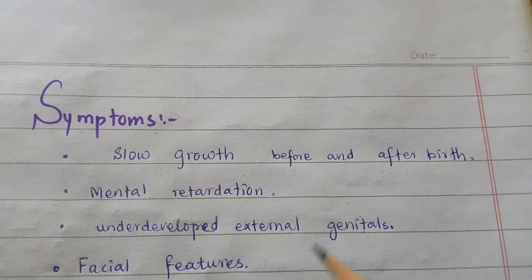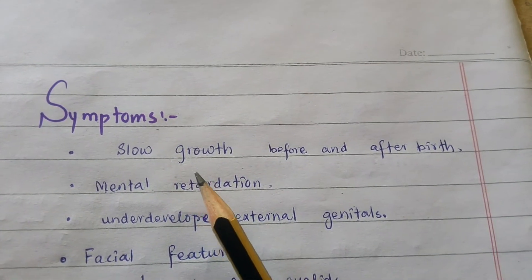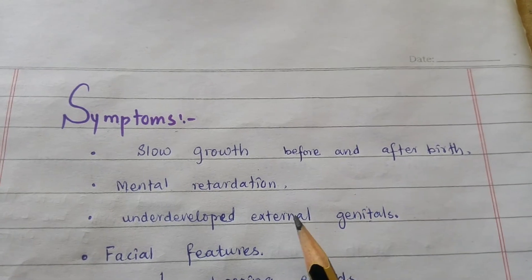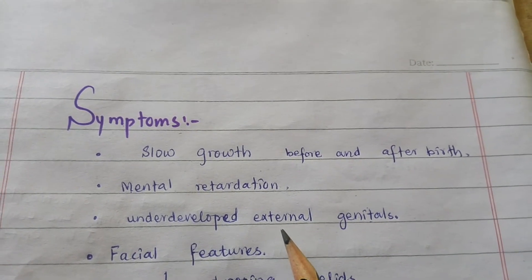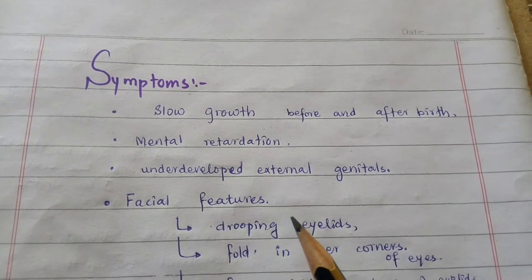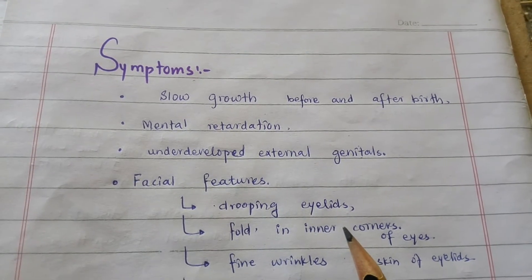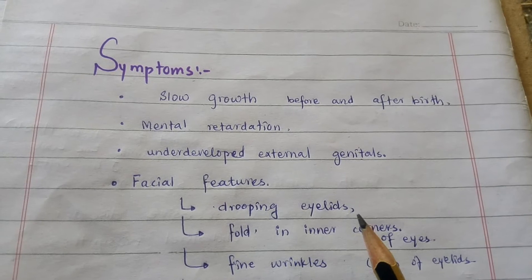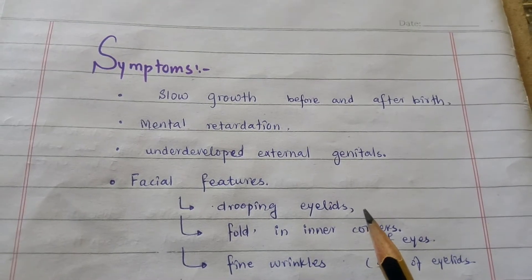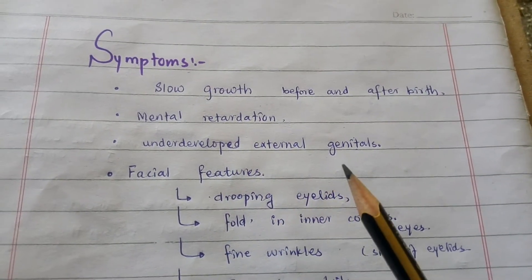SLOS is characterized by slow growth before and after birth, small head size, mental retardation, multiple birth defects, and underdeveloped external genitalia in males. Symptoms vary greatly among affected individuals and include growth delay, microcephaly, extra fingers and toes, fused second and third toes, cleft palate, underdeveloped external genitals in males, and mental retardation.